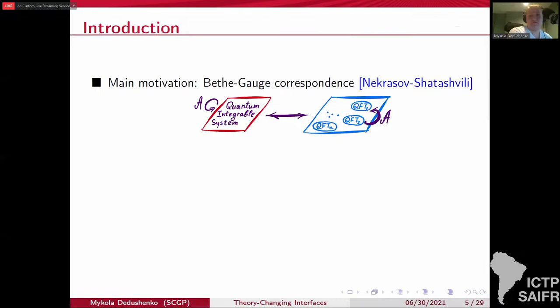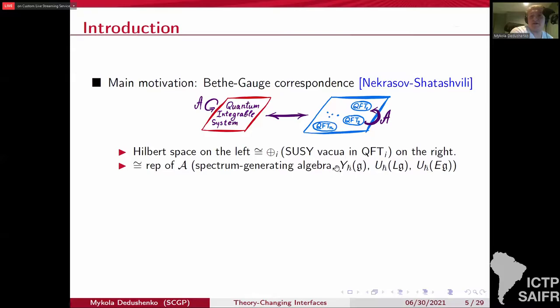But the main motivation really comes from Bethe-Gauge correspondence of Nikrasov and Shatashvili, where on the left hand side you have a quantum integrable system. On the right, you actually have a family of quantum field theories, supersymmetric quantum field theories. The Hilbert space on the left corresponds to the sum of supersymmetric vacua on the right among all those theories. And there's an algebra A acting on the left, acting on the Hilbert space of your theory, the spectrum generating algebra that could be a Yangian or quantum loop or quantum elliptic algebra. So one could wonder what's the realization on the right, and if it acts between different members of the family, can you construct interfaces realizing those actions?